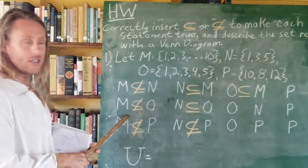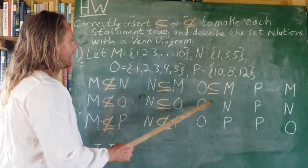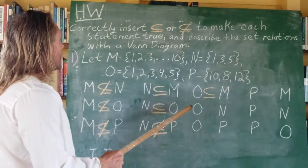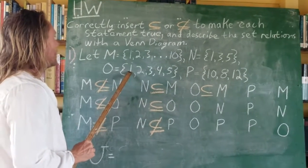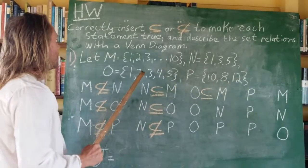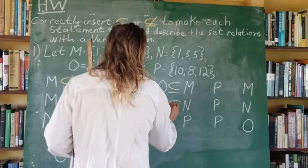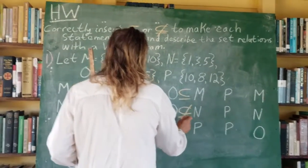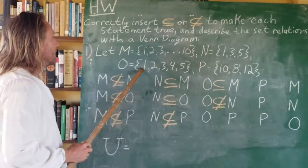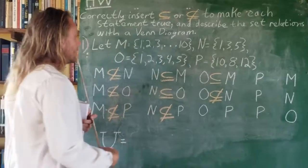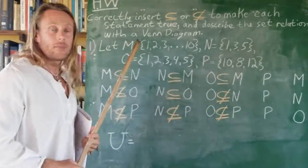Good thing we didn't cheat. Is O a subset of N? O has a 1, N has a 1. What about 2? No. So O is not a subset of N. How about O with P? O has a 1, P does not. O is not a subset of P.